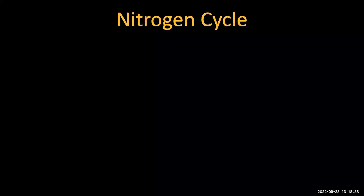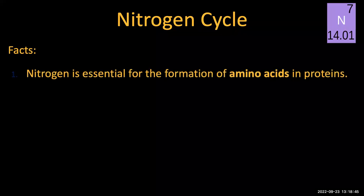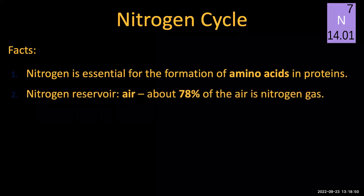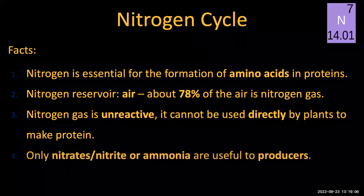Let's take a look at the biogeochemical cycle of nitrogen as an example. Nitrogen is essential for the formation of amino acids and proteins. The nitrogen reservoirs include the atmosphere, or air, where about 78% of the air is nitrogen gas. However, nitrogen gas is unreactive and cannot be used directly by phytoplankton. Only nitrates, nitrite, or ammonia are useful to phytoplankton — the marine producers.